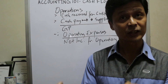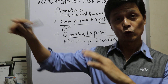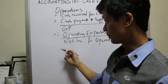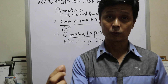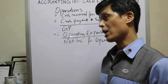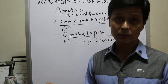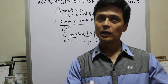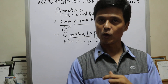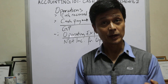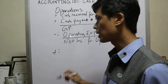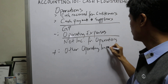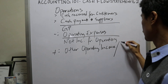Ito na yung pinakakita mo — labas na rito yung mga paswelto. Ito na yung kita mo. Of course, ibabawas mo pa yung tax dyan. Yun na yung pinakakita mo. Now, aside from net income from operations, ano pa yung pwede nating matawag na cash flow from operations? Meron pa yung tinatawag na other operating income or expenses.